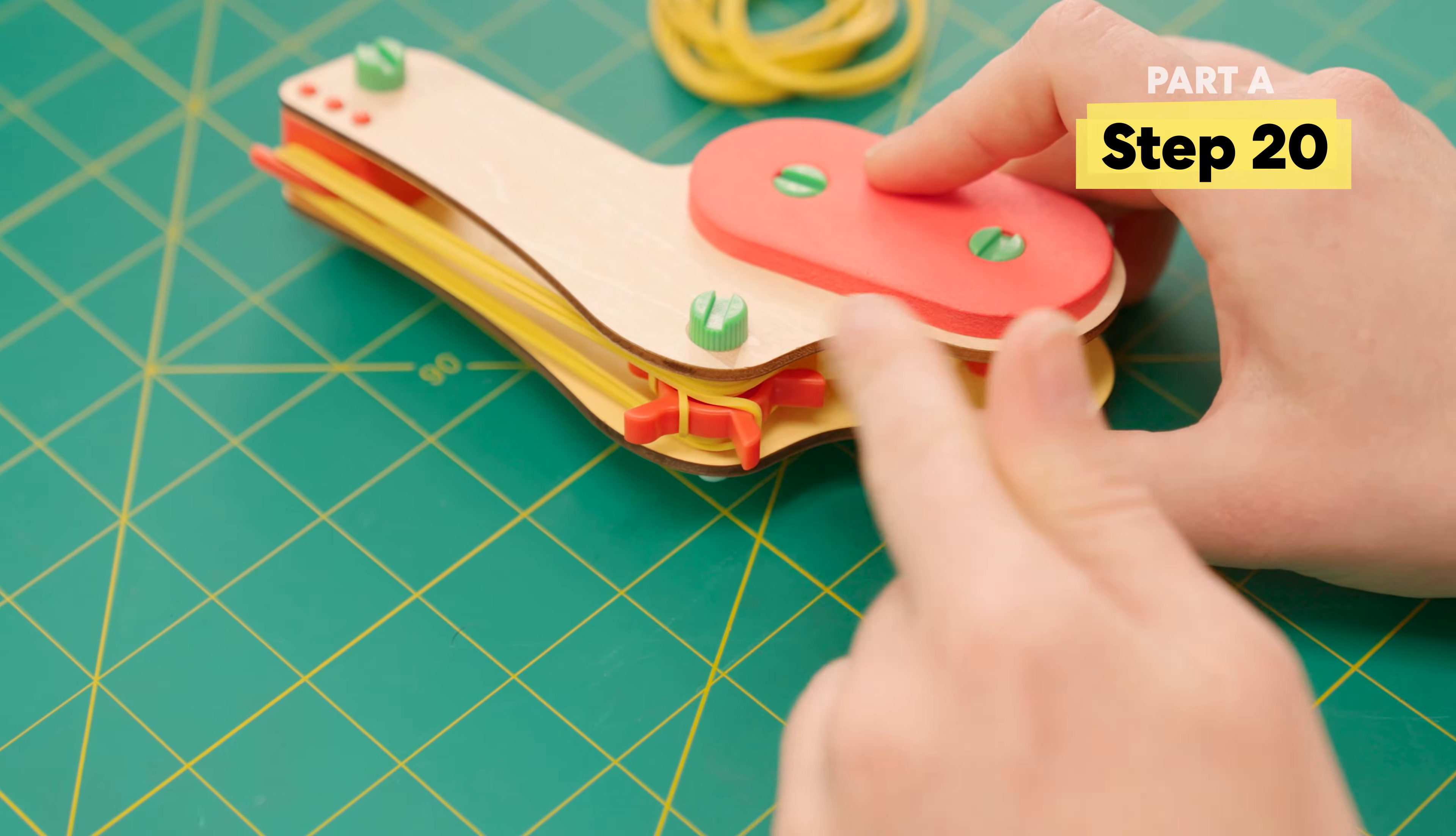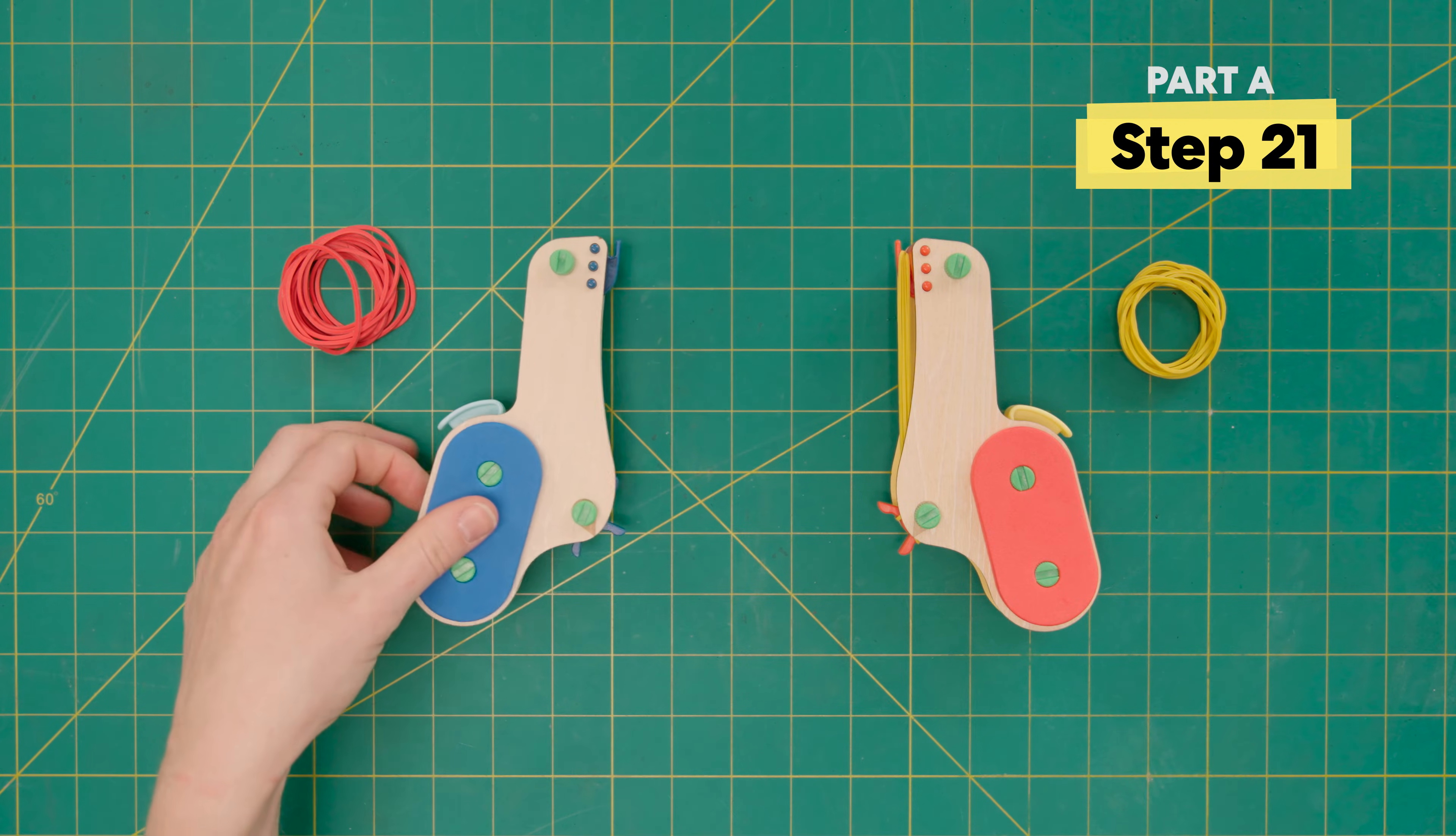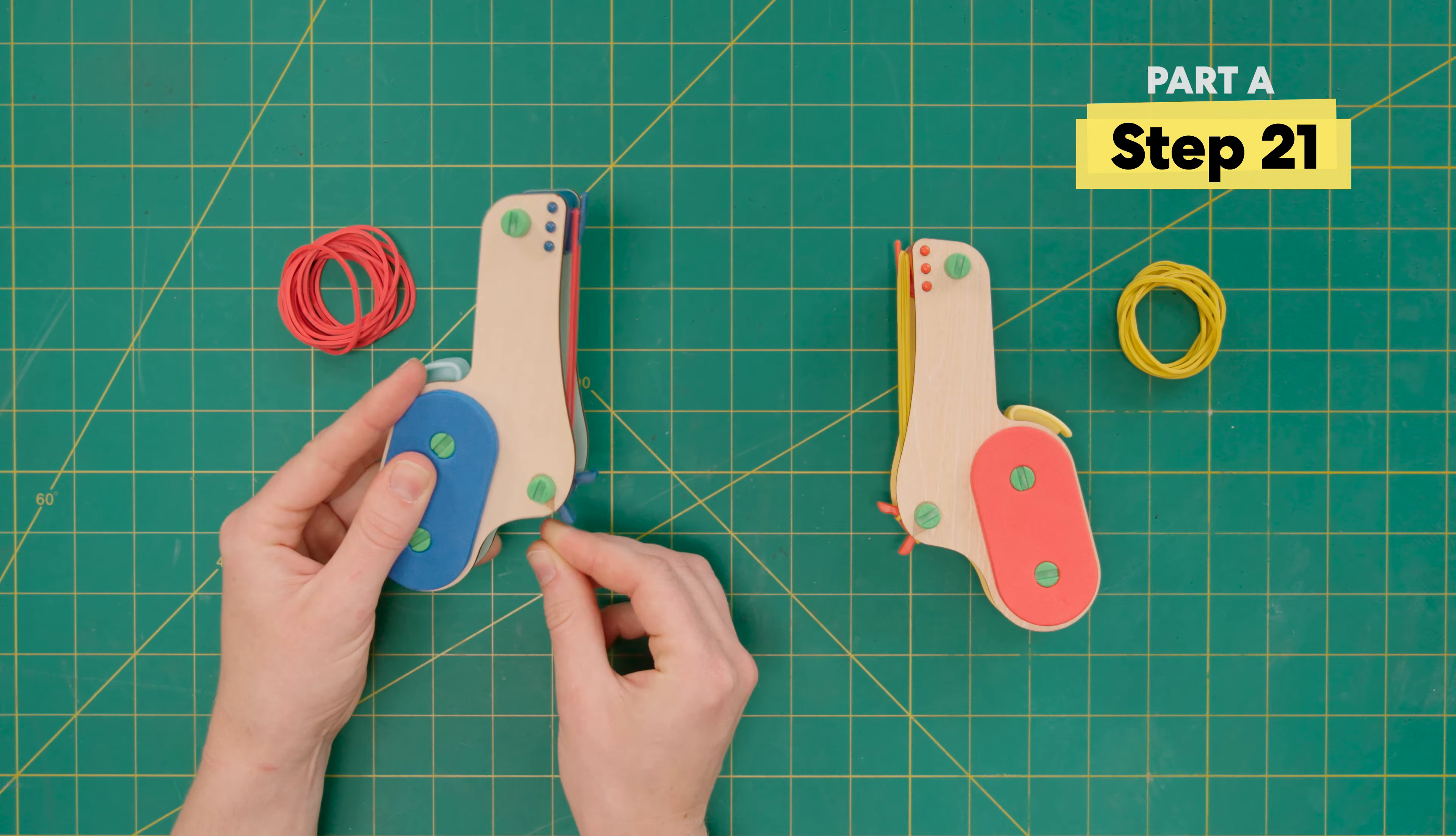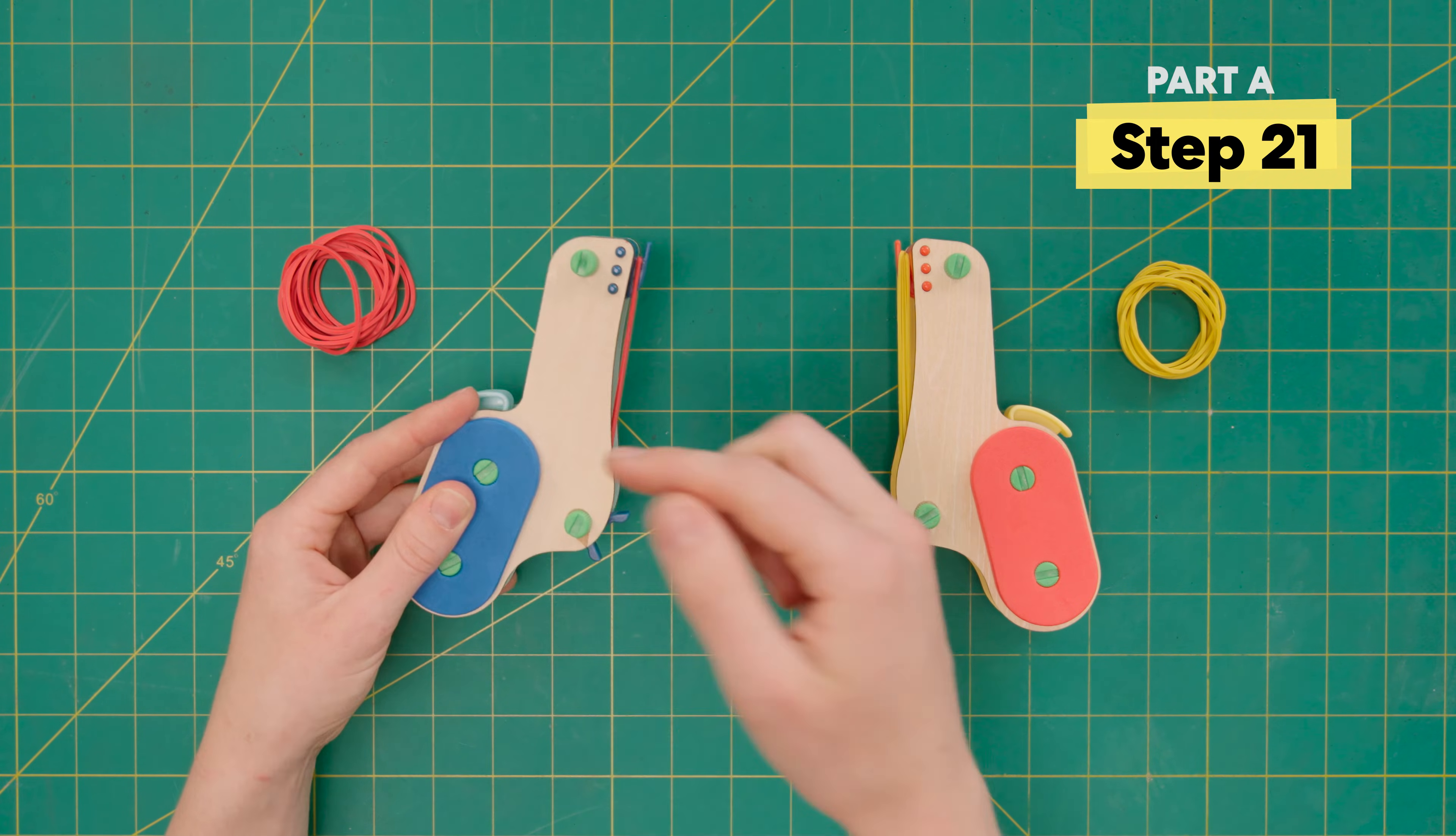Awesome! So, now I've loaded up all my rubber bands. So, time to load up the other blaster. We're going to do this one the exact same way where we start with the hook. We stretch it down to the lowest peg and then manually rotate it once before loading on the next.